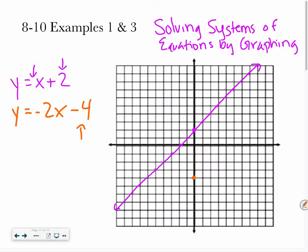My slope is negative 2x, so that means I'm going to go down 2 over 1, down 2 over 1, or I can also go up 2, left 1, up 2, left 1.